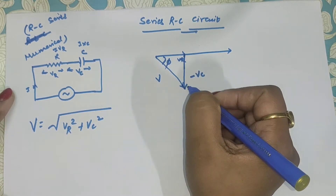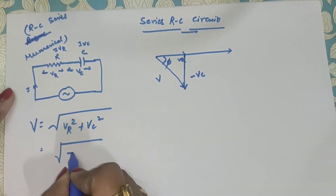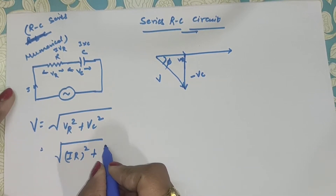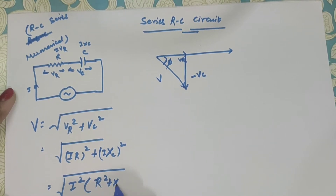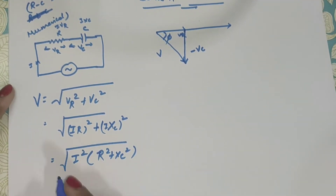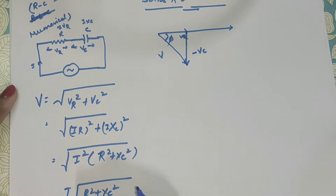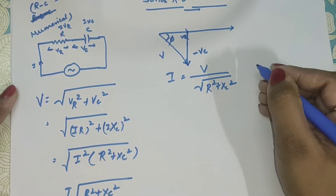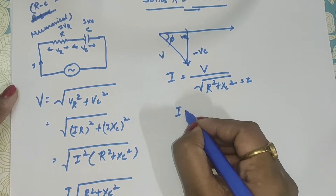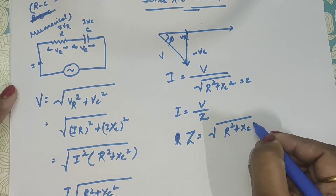According to trigonometry, V squared equals VR squared plus VC squared. Now VR squared equals (I × R)² and VC squared equals (I × XC)². So I squared will be common, giving V = I × √(R² + XC²). From here, I equals V divided by √(R² + XC²). You can write this as Z, so I equals V upon Z, where impedance Z equals √(R² + XC²).